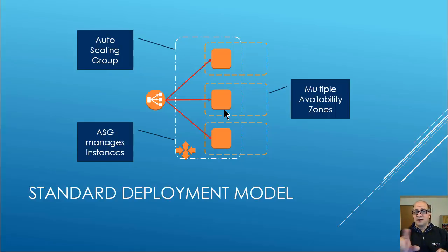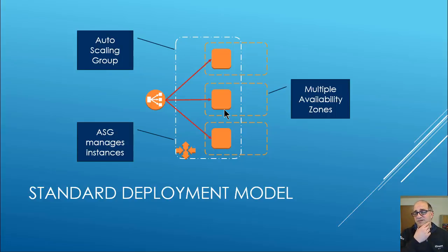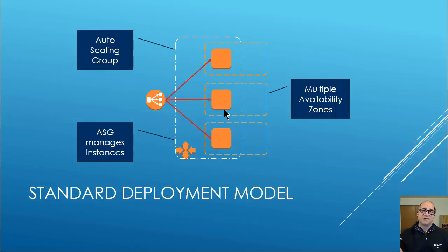The orange squares represent EC2 instances in the diagrams — I got these images from the Amazon PowerPoint template. The orange boxes represent the availability zones, and the white box represents the autoscale group managing those instances across the zones.